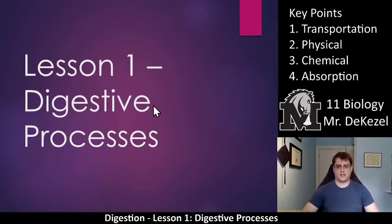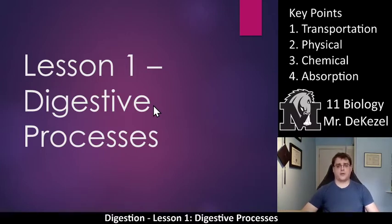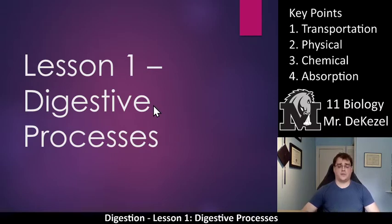There are four processes and they are listed in the key points: transportation, physical digestion, chemical digestion, and absorption. We are going to talk about those in detail, and then there is some work for you to do to find out where these processes take place in particular. So let's jump right into it.